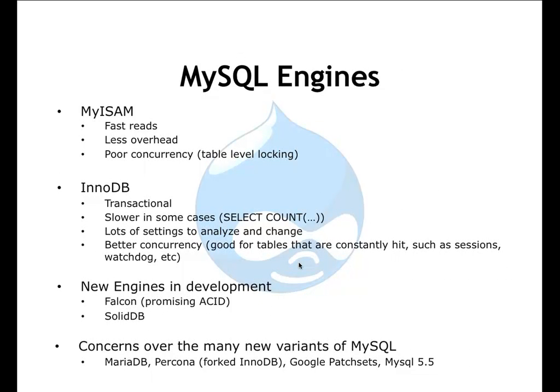The typical engine people install with a fresh Drupal site is MyISAM — that's what MySQL creates tables in by default. It has fast reads and not much overhead, but it has very poor concurrency, so you can get table-level locking. If you have lots of users writing to the cache on the same ID simultaneously, you'll see some interesting errors. It's probably best to use InnoDB in any case. It is transactional, in some cases slower, and has lots of settings to analyze, but there is much better concurrency and you can get just as good — if not better — performance than MyISAM.